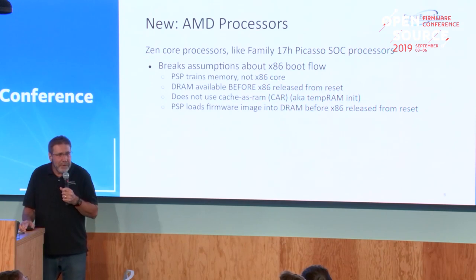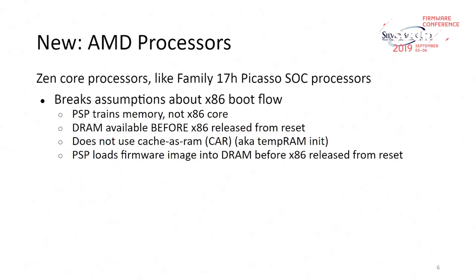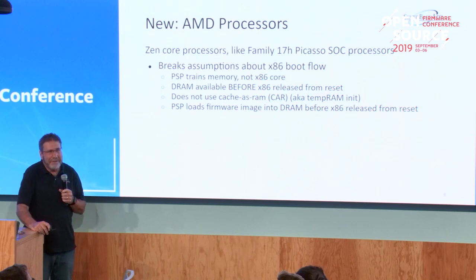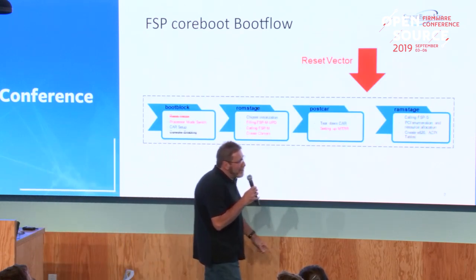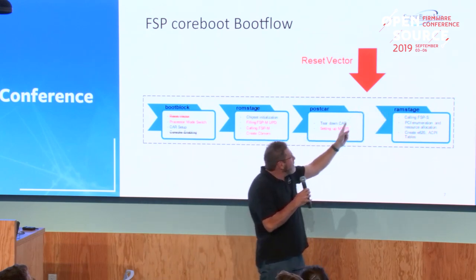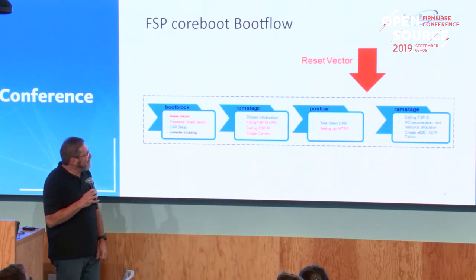Except AMD decided to do some interesting things. There's actually a security core — those of you who are Intel-centric can think of this as sort of like the ME. The platform security processor actually trains memory for us. So when the x86 cores come out of reset, DRAM is done — it's sitting there waiting. The PSP has kindly copied our ROM image out of the SPI ROM into DRAM for us. We don't even have to do execute-in-place. The hardware doesn't actually have the capability to do cache-as-RAM; you have to use the PSP core to train memory, which sort of changes that flow. When the x86 comes out of reset, we're already in RAM, but all the early-stage red stuff didn't get done, which left us with a bit of a mess.